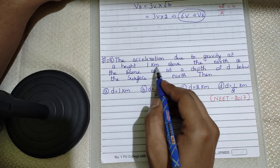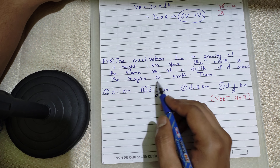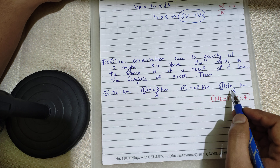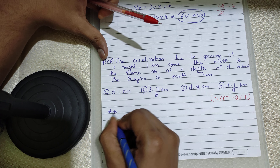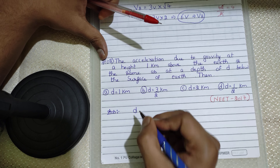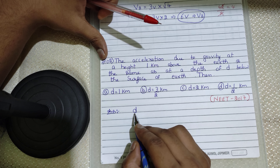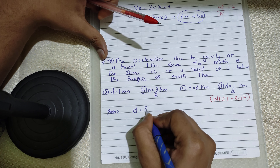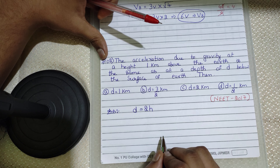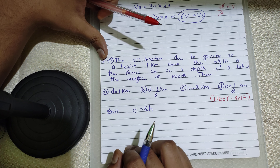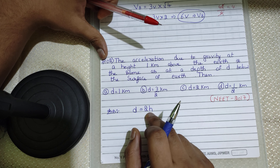The acceleration due to gravity at a height of 1 km above the earth is the same as at a depth D below the surface of the earth. We need to find the relation between depth and height. Remember this important relation: the acceleration at a depth D below the surface of the earth is equal to 2 times the acceleration at a height H above the surface of the earth.